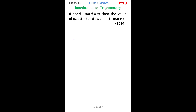Hi, here we have a question from intro to trigonometry. If sec theta minus tan theta equals to m, then the value of sec theta plus tan theta is — so we need to find out the value of sec theta plus tan theta.